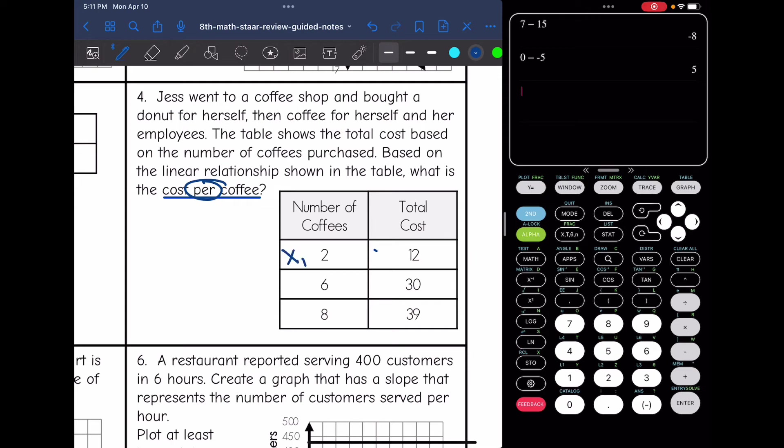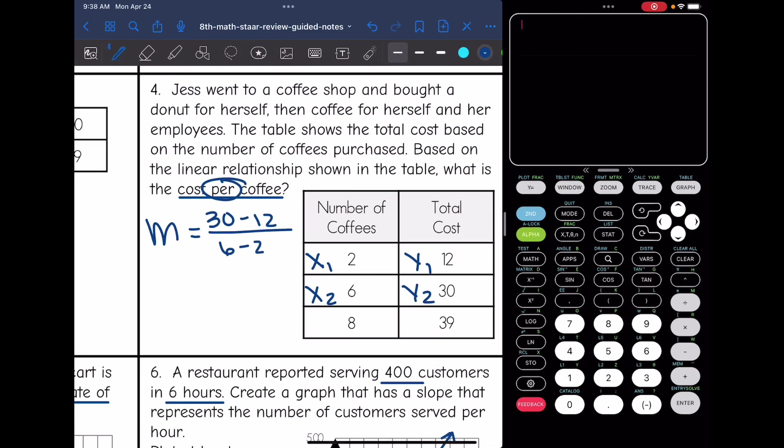So I'm going to plug into slope formula. First thing I'm going to do is label points x1, y1, x2, y2. You can use any two points in the table, I just chose to use the first two. So to find the slope, I'll do y2 minus y1, which is 30 minus 12, all over x2 minus x1, so 6 minus 2. So 30 minus 12 is 18, and 6 minus 2 is 4. So to figure out the cost per coffee, I will do 18 divided by 4, and I get $4.50 per coffee.